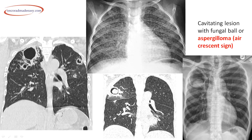Post-primary TB shows a large cavitating thick-walled lesion in the apical segment of the right upper lobe, and another cavitating lesion in the upper lobe of the left lung. Multiple tiny nodular lesions scattered throughout the lung parenchyma are miliary shadows or miliary nodules — typical of miliary tuberculosis.